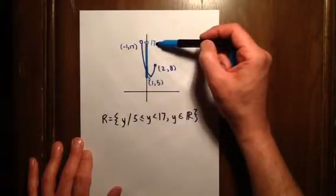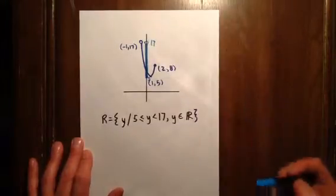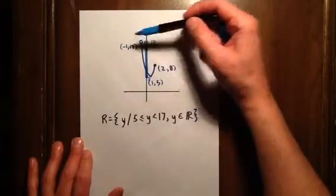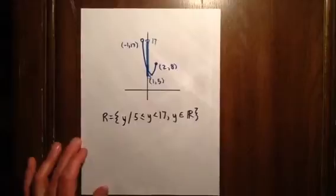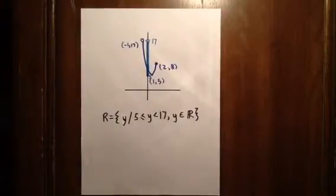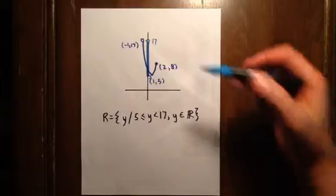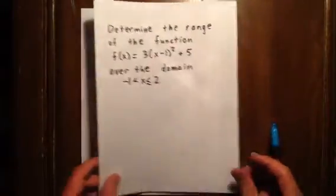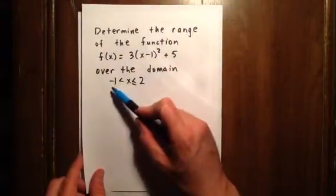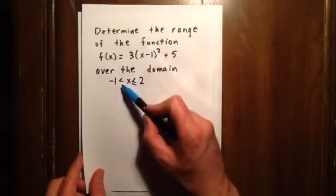And the only way to answer whether 17 actually appears in the range is to ask yourself whether the x value that produces 17 actually appears in the domain. Well, the only x value that's producing 17 in this relevant part of the curve is -1. So -1 as an x value produces 17 as a y value. Now, y is dependent on x, which means the range is dependent on the domain. So in order to determine whether 17 is in the range, we have to know was -1 in the domain. And if we look at it, we see it was not. Negative 1 is on the boundary of the domain, but it's not actually in it.